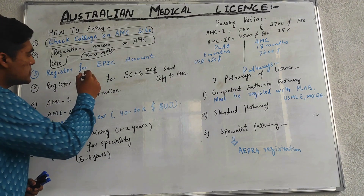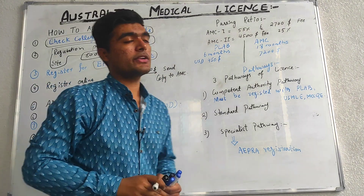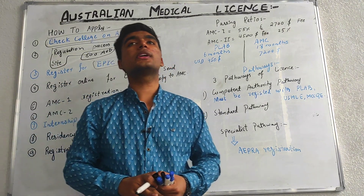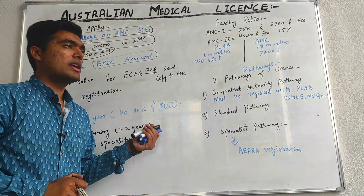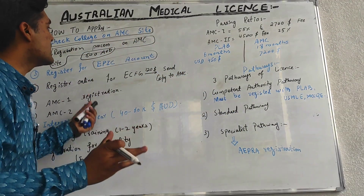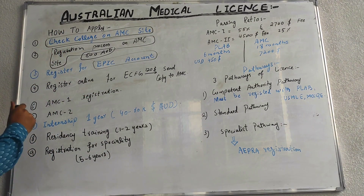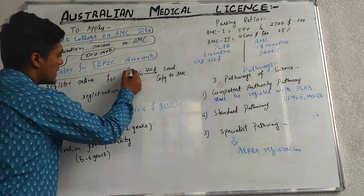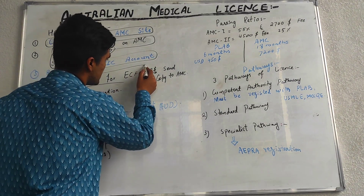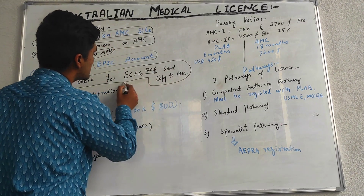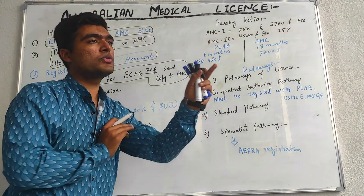The third step is registration for an EPIC account. EPIC is basically an Electronic Portfolio for International Credentials. You create this account and send your degree there for international verification. The fourth step is to register for ECFMG, which has a fee of 120 US dollars, and you must send the registration copy to the AMC.